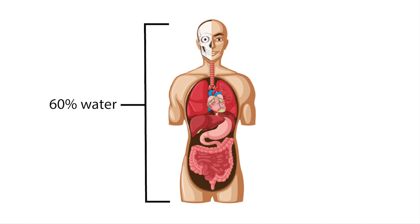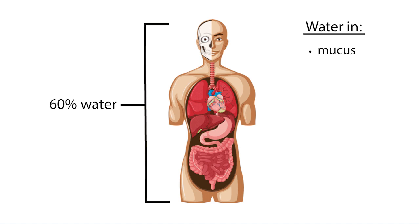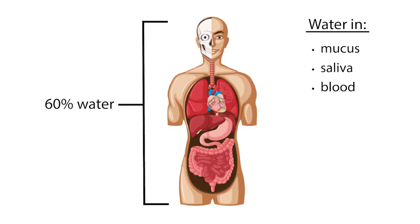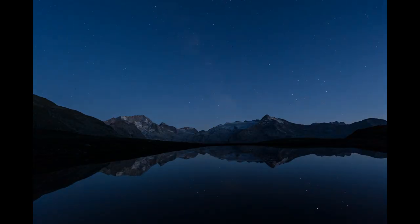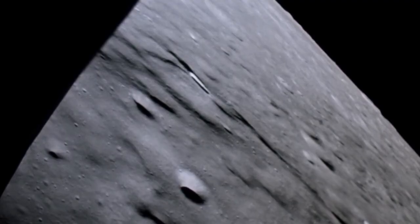The body itself is 60% water, not to mention there is water in your mucus, saliva, and blood. All of these gases and liquids are held under pressure on Earth, but in the perfect vacuum of space, they're not.